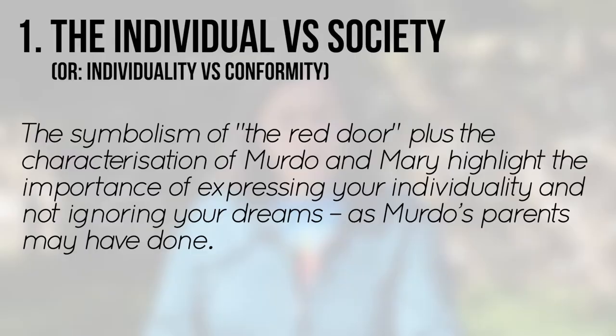Thus, in The Red Door, Crichton-Smith effectively uses the symbolism of the Red Door, coupled with the characterisation of both Murdo and Mary, to highlight the importance of being able to express your individuality, and not to be so worried about what others may think of you that you put aside your personal hopes and dreams — as the text suggests Murdo's parents may have done — just because your aspirations do not fit in with those of other members of society.